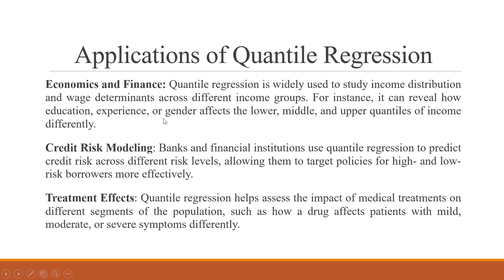Applications of quantile regression in economics and finance: it is widely used to study income distributions and wage determinants across different income groups. For instance, it can reveal how education, experience, or gender affects the lower, middle, and upper quantiles of income differently. In credit risk modeling, banks and financial institutions use quantile regression to predict credit risk across different risk levels, allowing them to target policies for high and low risk borrowers more effectively.